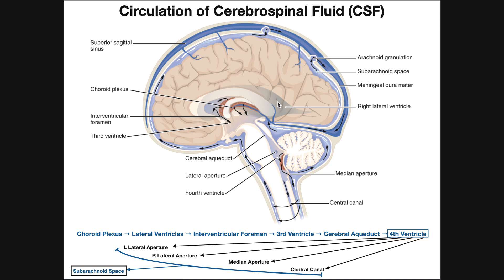The right lateral ventricle has a choroid plexus — shown here — which generates cerebrospinal fluid. Both left and right lateral ventricles do this. That CSF then moves through a hole called the interventricular foramen into the third ventricle. The third ventricle also has a choroid plexus, adding more CSF onto what already came through the interventricular foramen. Each step, more CSF is added.